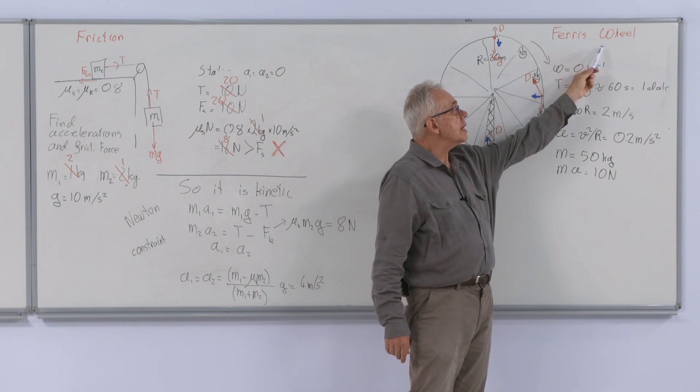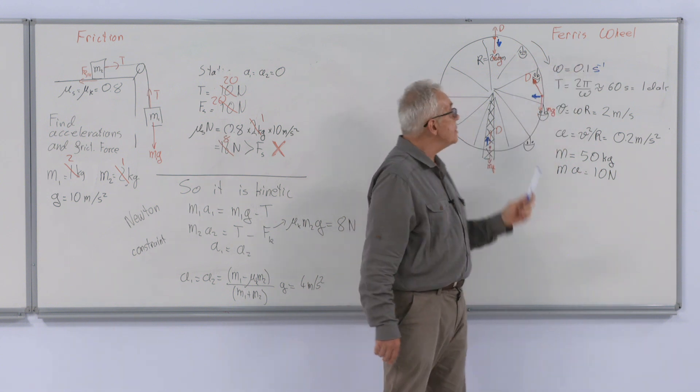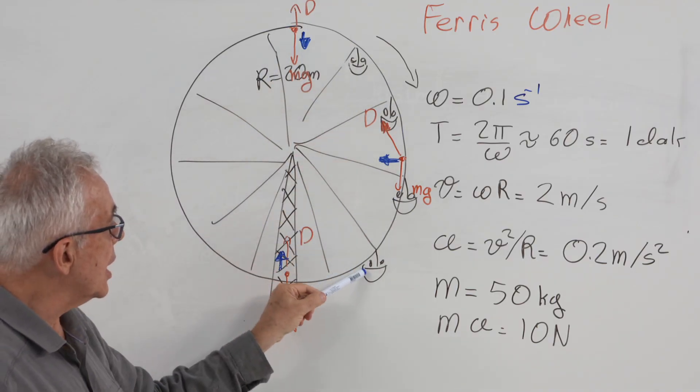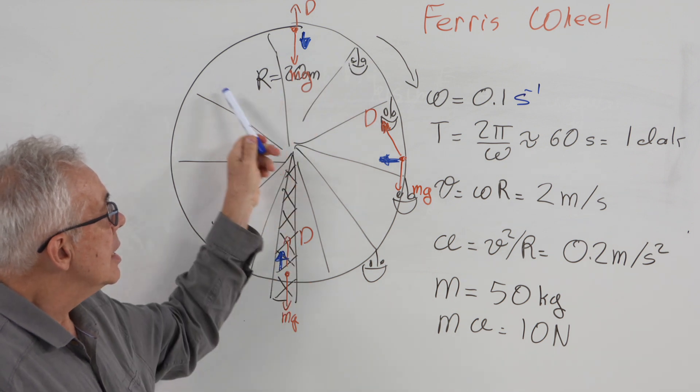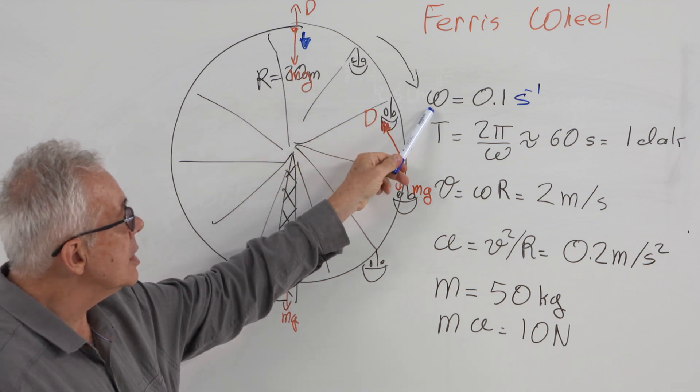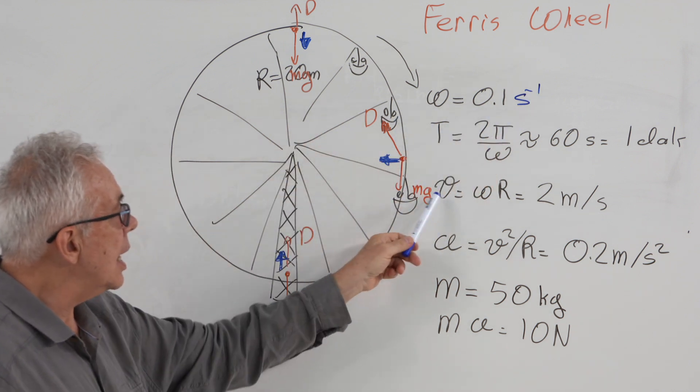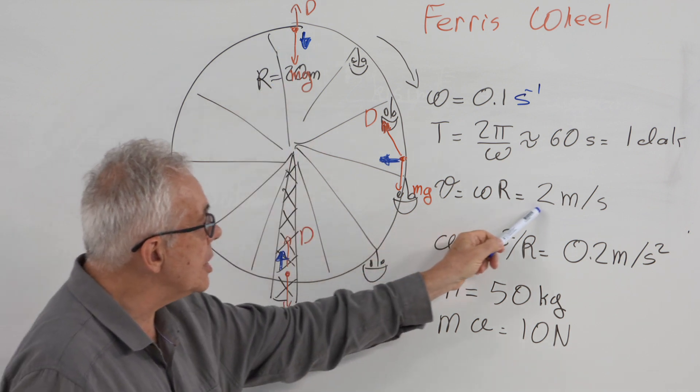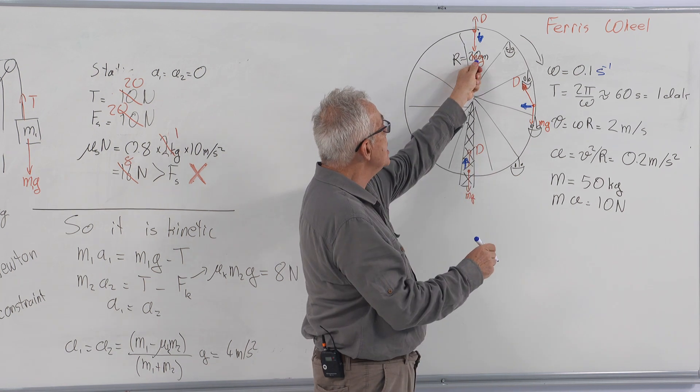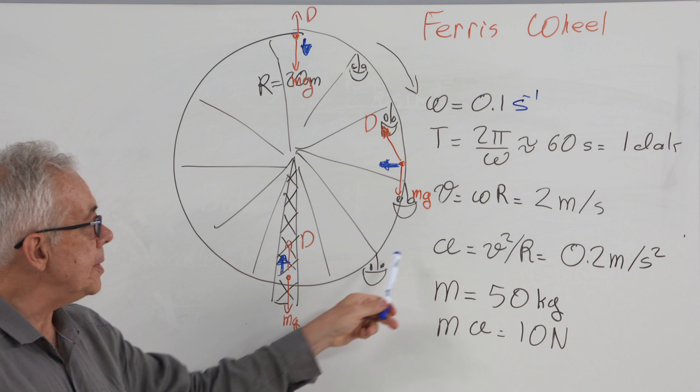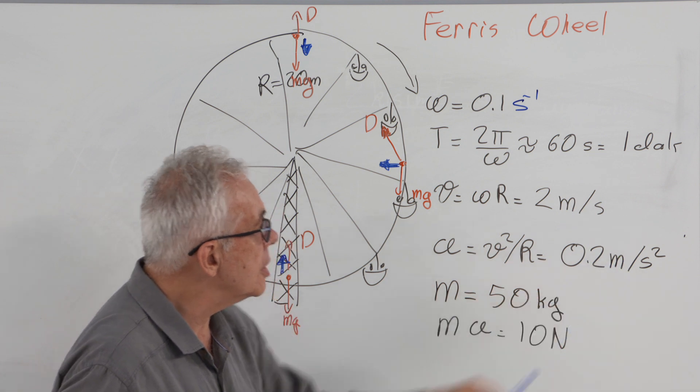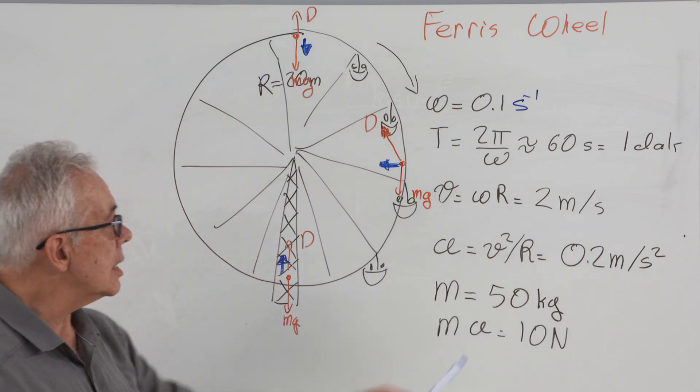Our next example is a Ferris wheel. Ferris wheel is a Dönmedolap. In this thing, the wheel is rotating. The riders are in these baskets. And the rotation period is 1 minute, so that the angular speed omega is 0.1 per second. And the linear velocity is 2 meters per second if the radius r is 20 meters. Centripetal acceleration is v square over r, and 0.2 meters per second squared.